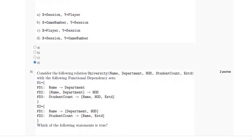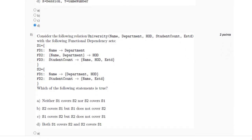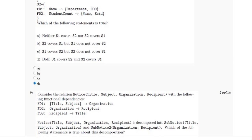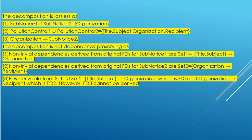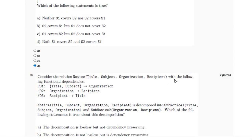For the eighth question, we have to find the statement which is true, which is option D. For the ninth question, we have been given the relation notice and we have to find which statement is true. The decomposition is lossless because on intersecting sub-notice1 and sub-notice2 there is a common field which is organization, and the union of both sub-notice1 and sub-notice2 gives title, subject, organization, and recipient. The organization is the super key of the second relation, and it is also not dependency-preserving. So the answer is option A.